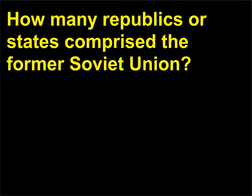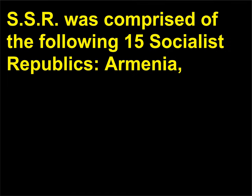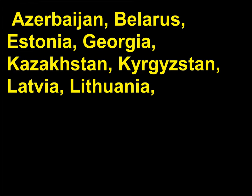How many republics or states comprised the former Soviet Union? The USSR was comprised of the following 15 socialist republics: Armenia, Azerbaijan, Belarus, Estonia, Georgia, Kazakhstan, Kyrgyzstan, Latvia, Lithuania, Moldova, Russia, Tajikistan, Turkmenistan, Ukraine, and Uzbekistan.